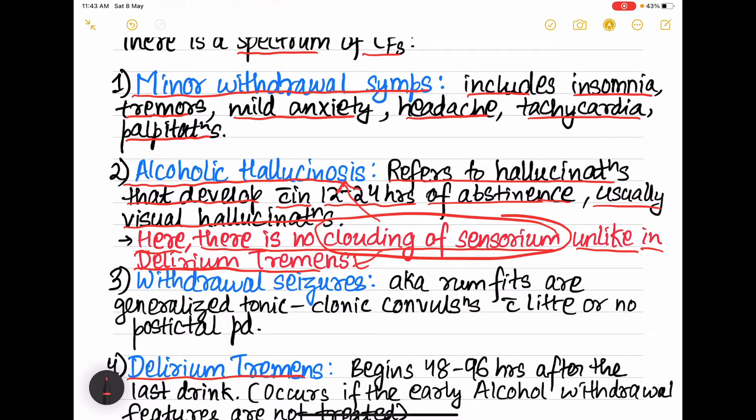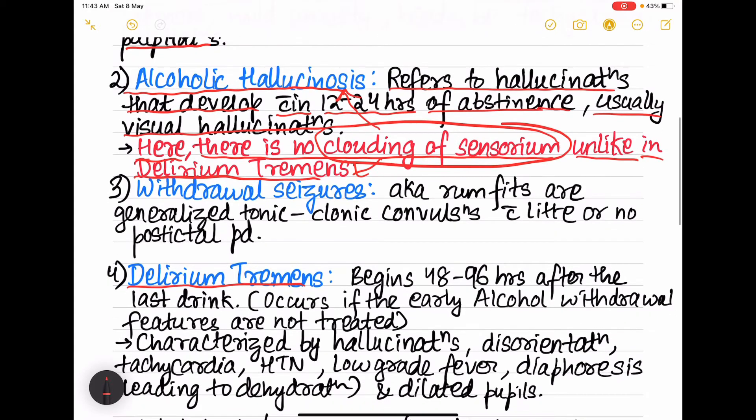Next is withdrawal seizures, also known as rum fits. These are generalized tonic-clonic convulsions with little or no postictal period. Postictal period means the period after the seizures, so here the postictal period will have a very short duration or it is absent.